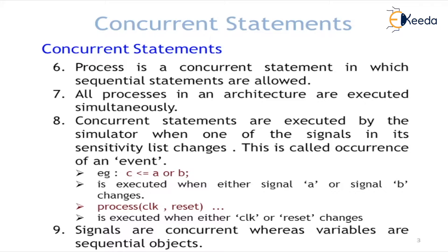Any change from one logic value to another logic value is considered a change, and whenever that change happens it will execute the process statement. Signals are concurrent objects, whereas variables are considered sequential objects, because variables are used inside processes where only sequential statements are executed, as well as in subprograms where only sequential statements are executed. In variable assignment, the value assignment happens immediately and the variable is used for further processing right away, so immediate assignment happens with a variable object.